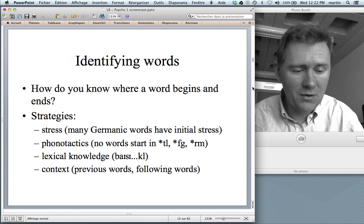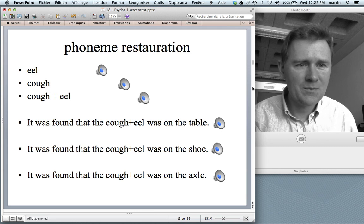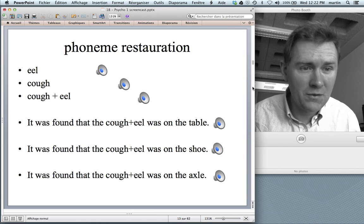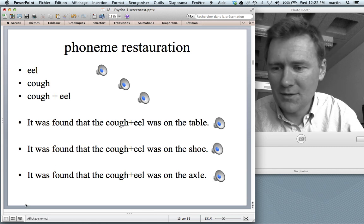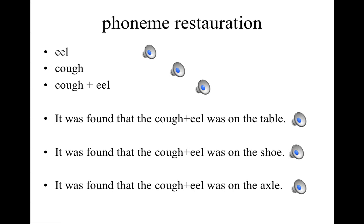To illustrate the powerful role of context, here is a classic experiment using artificial sounds that lead people to imagine they've heard a phoneme — called phoneme restoration. This is me saying 'eel.' This is me coughing. And this is a splice of the cough and 'eel' made with sound software — an artificial non-word. The interesting part: if you play this artificial sound inside a meaningful sentence, such as 'It was found that the [cough-eel] was on the table,' a good number of listeners report hearing 'It was found that the meal was on the table' — they hallucinate an M where there was only a cough.